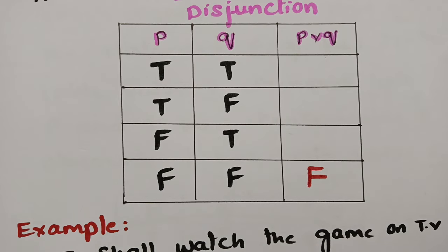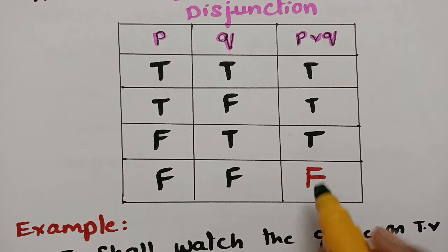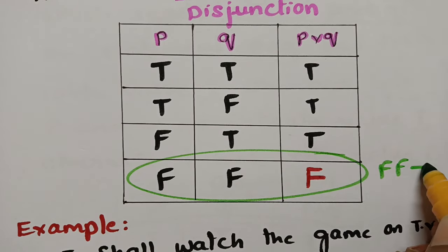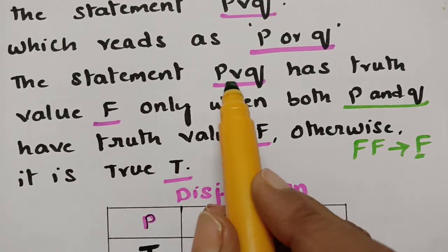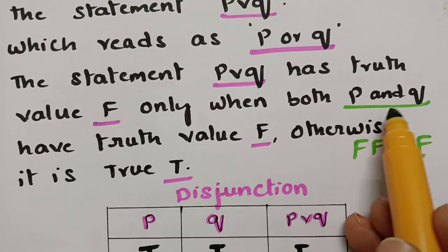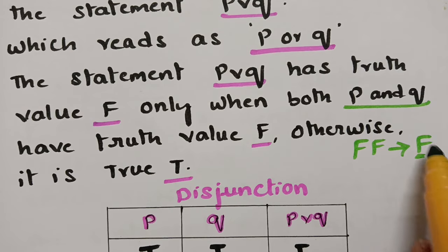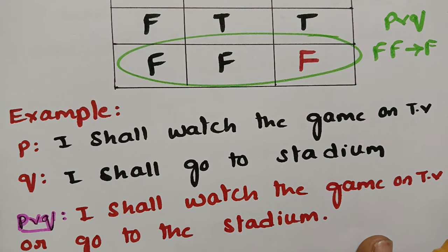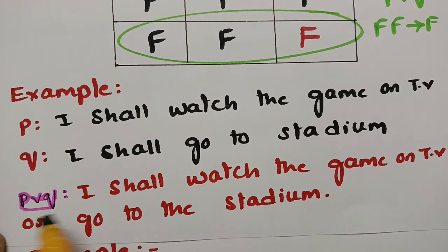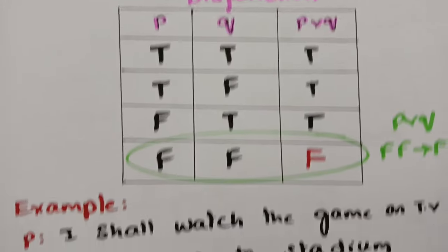The disjunction truth table: T, T, F, F and T, F, T, F. Wherever you find two false values — if P is false and Q is false — the statement is automatically false. The rest are all true. The statement P ∨ Q has truth value F only when both P and Q have truth value F. Example: P is 'I shall watch the game on TV,' Q is 'I shall go to the stadium.' P or Q: 'I shall watch the game on TV or go to the stadium.'